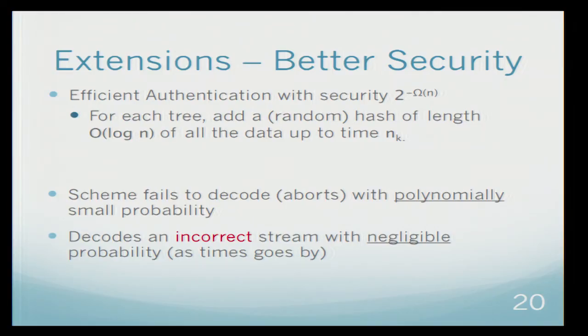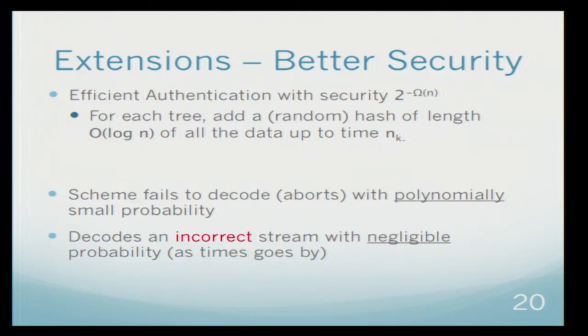However, if Bob didn't abort and he outputs some output, the probability that this will not be what Alice sent him will be negligibly small. You can think about this part as the error correction part of our scheme and this is the authentication part of the scheme.